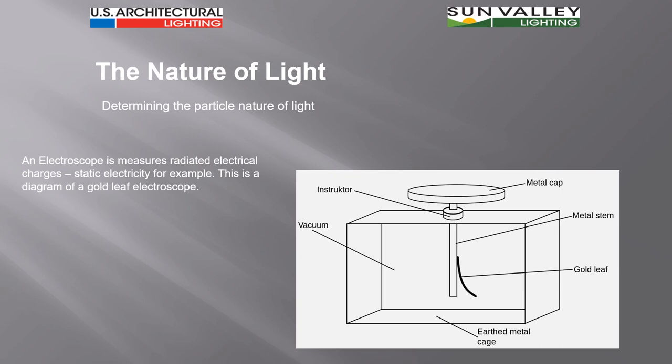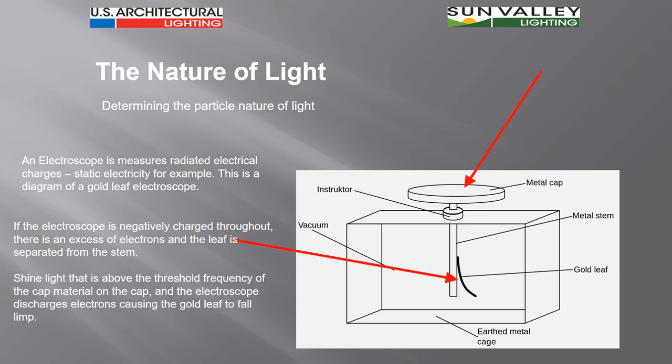And since we know in magnetism that like poles repel, the electrons in the gold leaf and the electrons in metal stem cause the two to bend away from each other. That's the reason why you see that gold leaf then bending away.